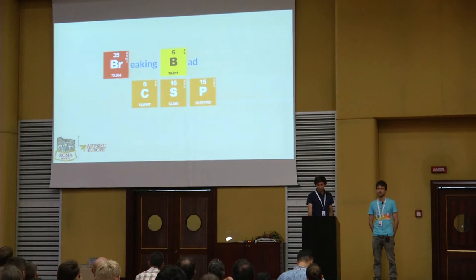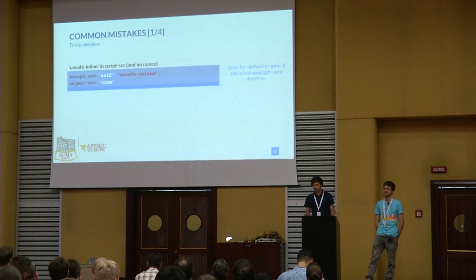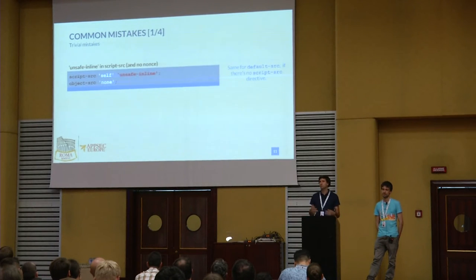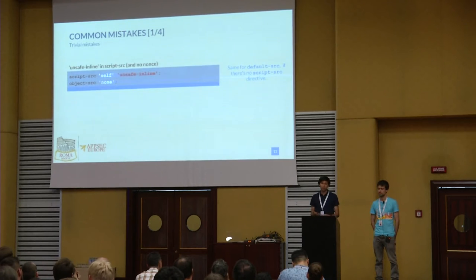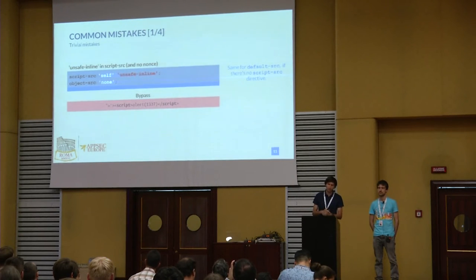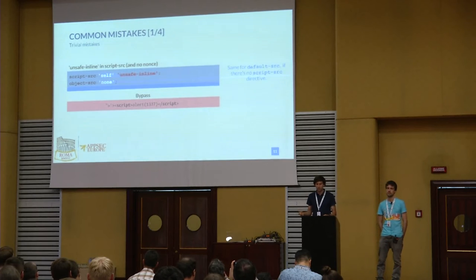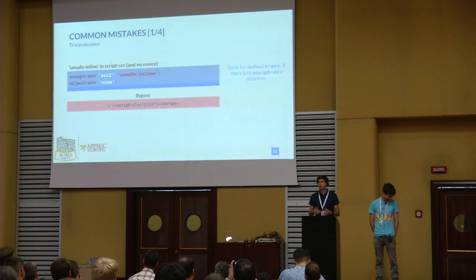How did we break CSPs? Starting with common mistakes. There are still many policies that just allow unsafe-inline, which basically removes all XSS protection — an attacker could inject a normal XSS string as if CSP weren't there. Same issue if there's no object-src with only a default-src. These are trivial but account for many broken CSPs when talking about preventing unwanted script execution.